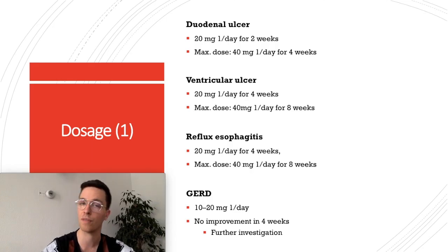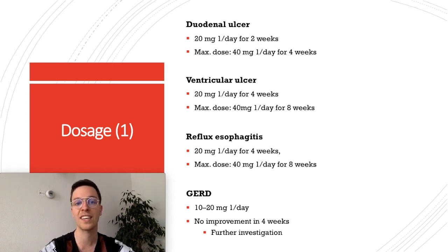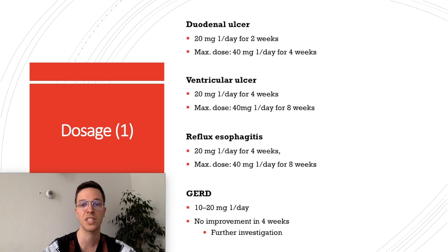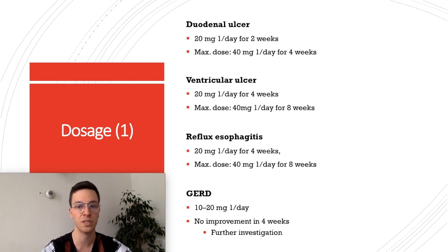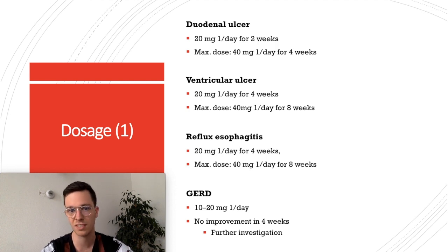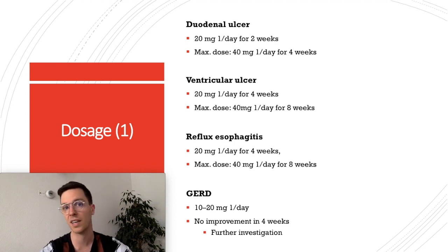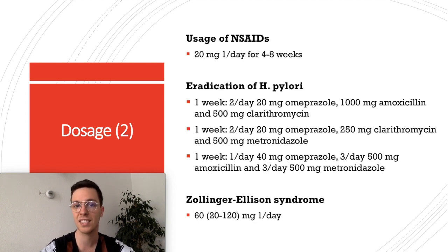For duodenal ulcers, start with 20 mg once a day for 2 weeks, increasing to 40 mg once a day for up to 4 weeks. For a gastric ulcer, the same dosing applies but usually for 8 weeks. For reflux esophagitis, take 20 mg once a day for 4 weeks, with a maximum of 40 mg once a day for 8 weeks in severe cases. For GERD, the correct dose is 10 to 20 mg a day; if there's no improvement after 4 weeks, contact your GP. When taking Omeprazole alongside NSAIDs, use 20 mg for 4 to 8 weeks, or as long as you use the NSAIDs.